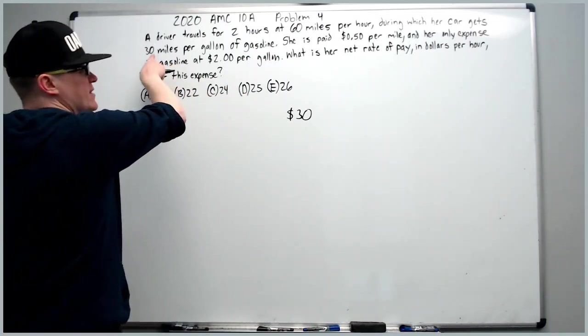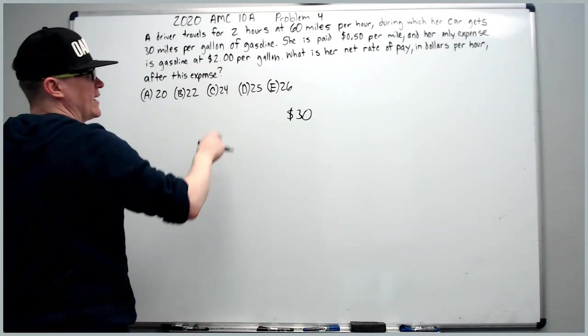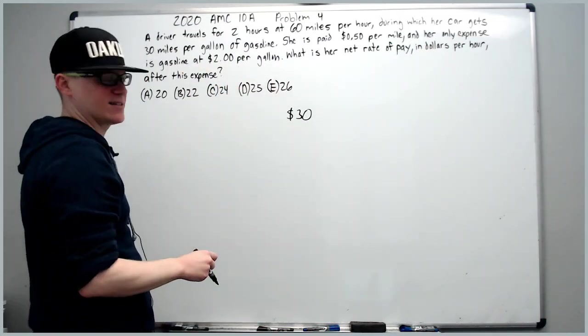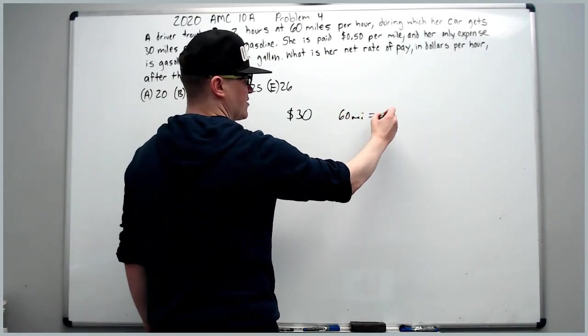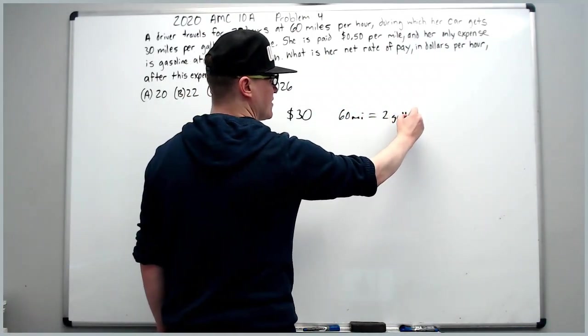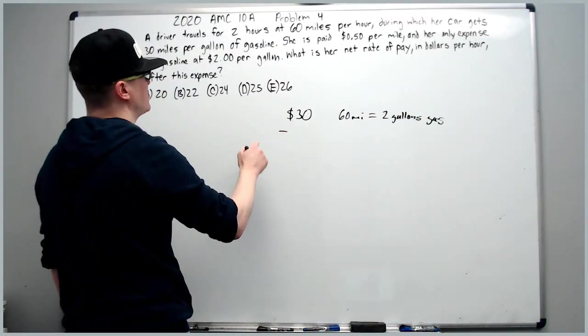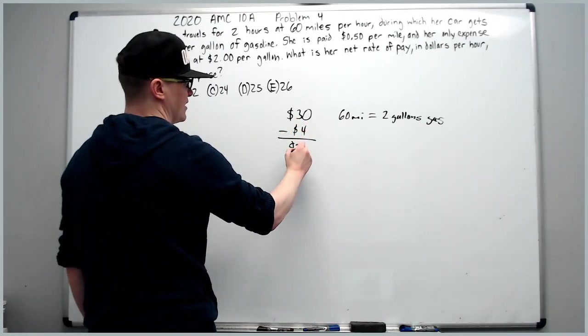Then her only expense is gas, which costs her $2 per gallon, and she gets 30 miles per gallon of gas. So if she goes 60 miles, that's going to equal 2 gallons of gas. And we can simply subtract 2 times $2, which is $4, to get 26.